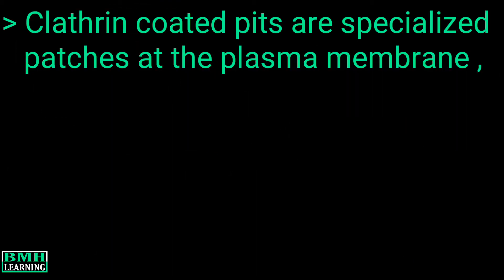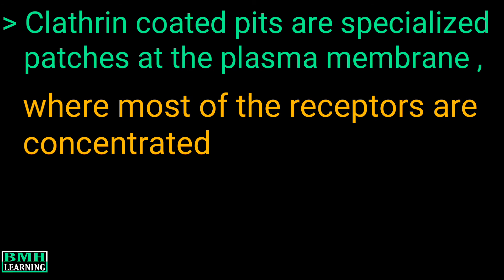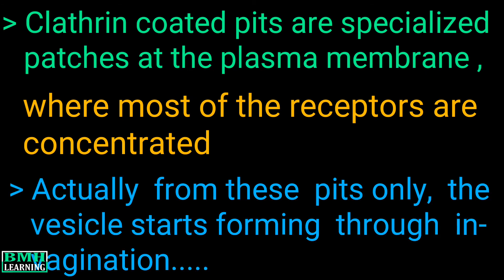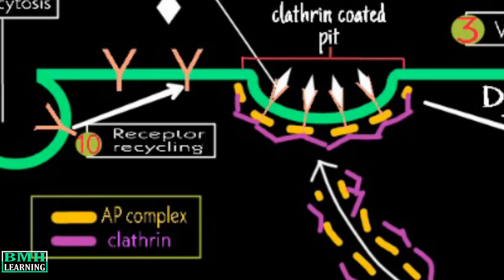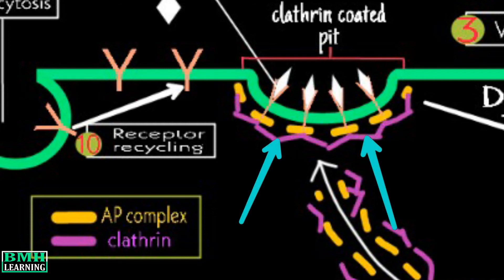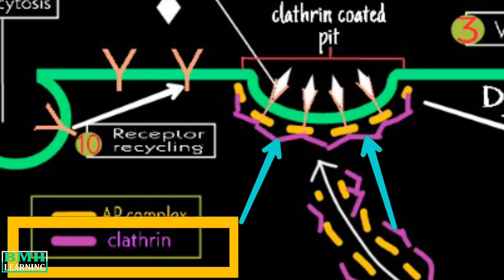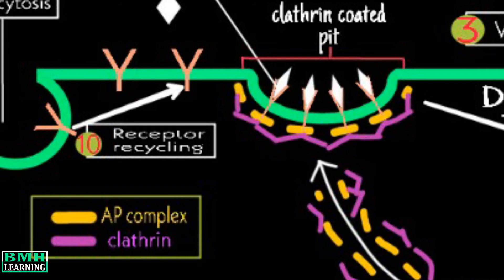The clathrin-coated pits are specialized patches at the plasma membrane where most of the receptors are concentrated. From these pits, the vesicle starts forming through invagination and then buds off. The cytoplasmic surface of these pits is coated by clathrin proteins, and that's how they are referred to as clathrin-coated pits.